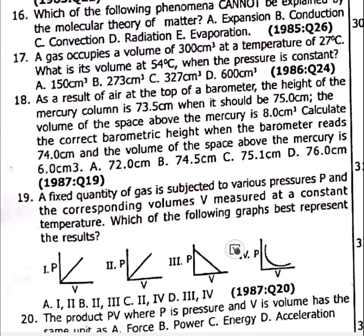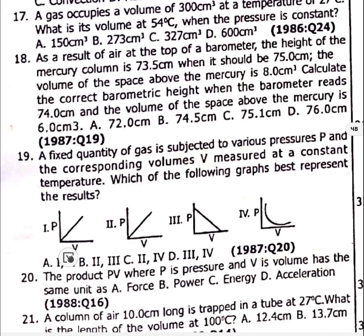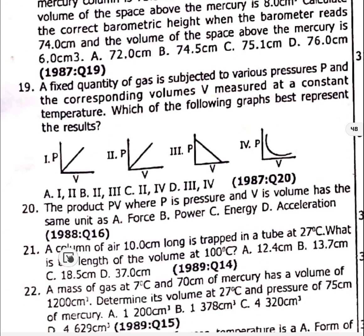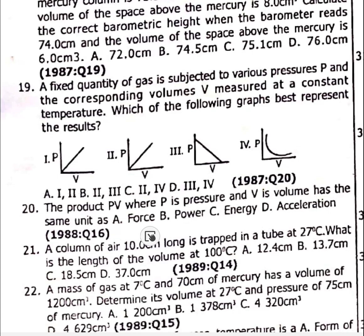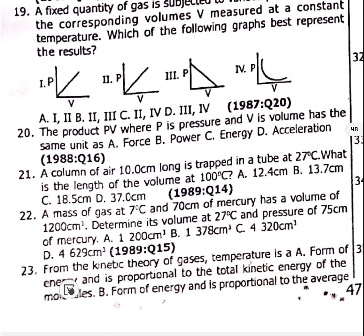Question 20: The product PV, where P is pressure and V is volume, has the same unit as energy — option C. Questions 21 and 22 involve calculations.